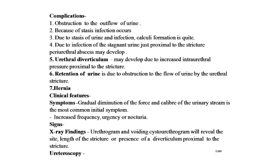Clinical features: symptoms include gradual diminution of force and caliber of the urinary stream as the most common initial symptom, along with increased frequency, urgency, and nocturia. Signs: X-ray findings, urethrogram, and ascending urethrogram reveal the site, length of the stricture, or presence of a diverticulum proximal to the stricture. Urethroscopy confirms the diagnosis very precisely — the stricture is seen as white fibrous tissue around a small hole, and may be situated toward the roof or floor, sometimes taking the form of a crescent.